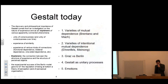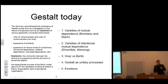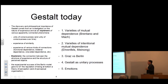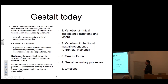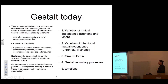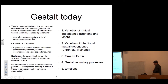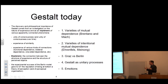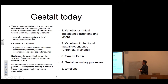What I want to suggest is that the discovery and the philosophical importance of Gestalt comes from an investigation on the nature of experience as an explanans of various apparently connected phenomena — phenomena that are almost never studied now in Gestalt theory. These are, first, the unity of consciousness at a time but also unity of consciousness over time. Gestalt was conceived as an explanans also for our experience of similarity — for example, we experience two cubes or two squares as being similar. What is the basis of similarity and what is the basis of our experience of similarity?